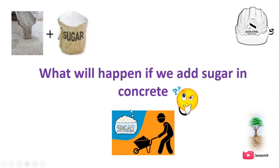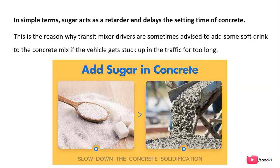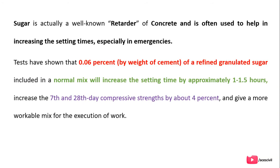What will happen if we add sugar in concrete? In simple terms, sugar acts as a retarder and delays the setting time of concrete. This is the reason why transit mixture drivers are sometimes advised to add some soft drink to the concrete mixture if the vehicle gets stuck in traffic for too long. As you can see in the diagram, adding sugar in concrete slows down the concrete solidification.